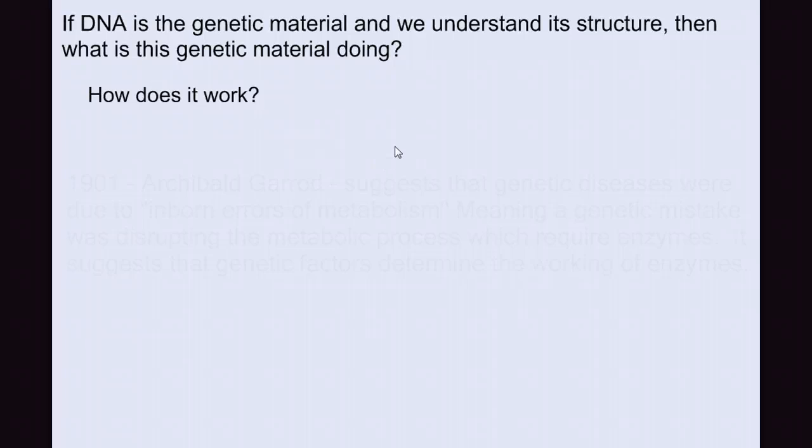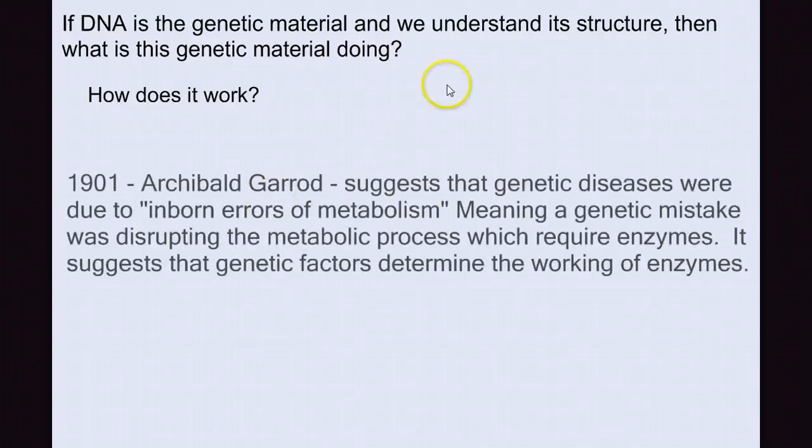So if DNA is the genetic material, and we understand its structure, then what is this genetic material doing? How does DNA work? Well, again, we have to go back. In 1901, Archibald Garrod suggested that genetic diseases were due to inborn errors of metabolism, meaning that a genetic mistake was disrupting the metabolic process, which required enzymes. It suggests that the genetic factors determined the working of enzymes.